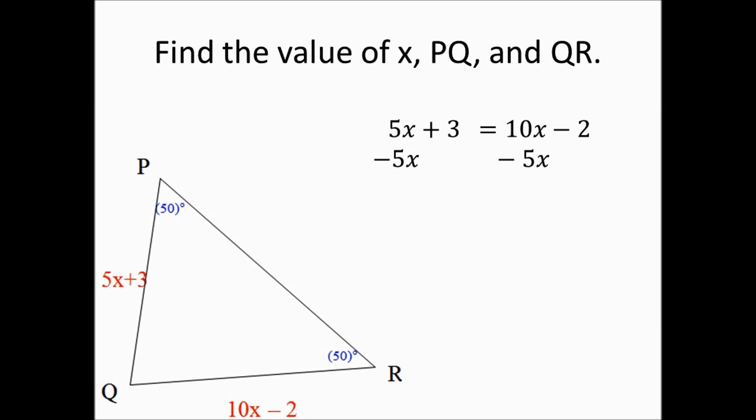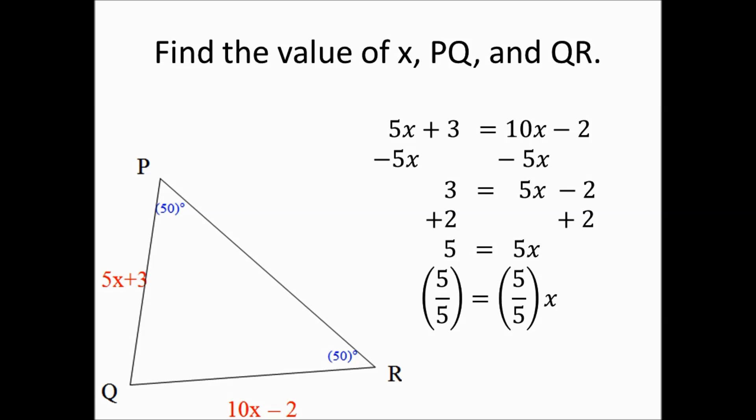First, we subtract 5X from both sides: 5X minus 5X is 0, so we bring down 3, and 10X minus 5X gives us 5X minus 2. Next, we add 2 to both sides: 3 plus 2 equals 5, and minus 2 plus 2 equals 0, giving us 5 equals 5X. Dividing both sides by 5: 5 divided by 5 equals 1, so X equals 1.